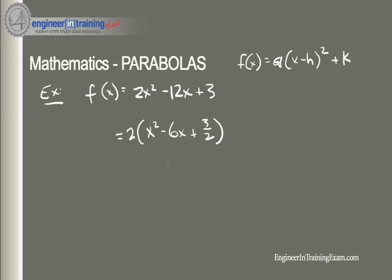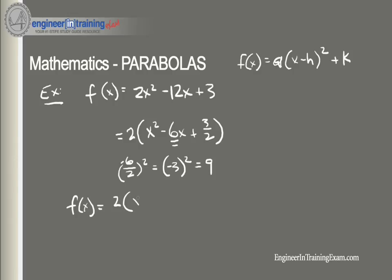This is where the process gets tricky. Instead of adding the result to both sides like in standard completing the square, we're going to add and subtract the result on the same side. To complete the square, take the coefficient of x, which is −6, divide by 2 to get −3, then square it: (−3)² = 9. So 9 is the constant we add and subtract. We get f(x) = 2(x² − 6x + 9 − 9 + 3/2).